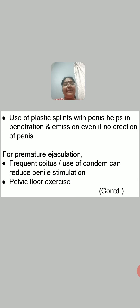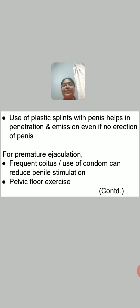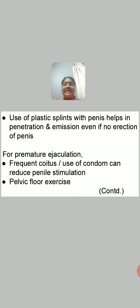This practice helps in relieving impotence. Another important cause of male infertility is premature ejaculation. To relieve premature ejaculation, frequent coitus or use of a condom is recommended, as this reduces penile stimulation. Premature ejaculation occurs due to over-stimulation of the penis; as frequency of coitus increases, stimulation reduces. Use of a condom also controls penile stimulation. Pelvic floor exercise is also important.